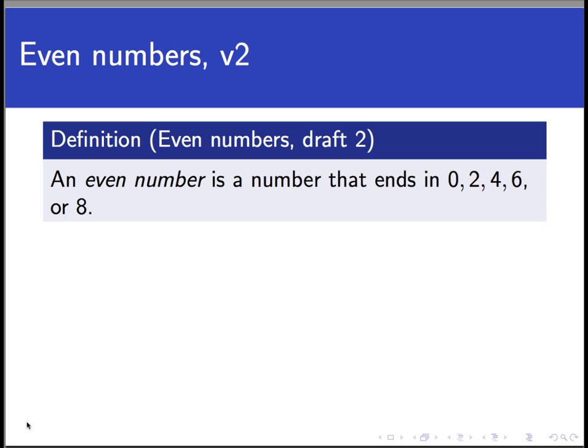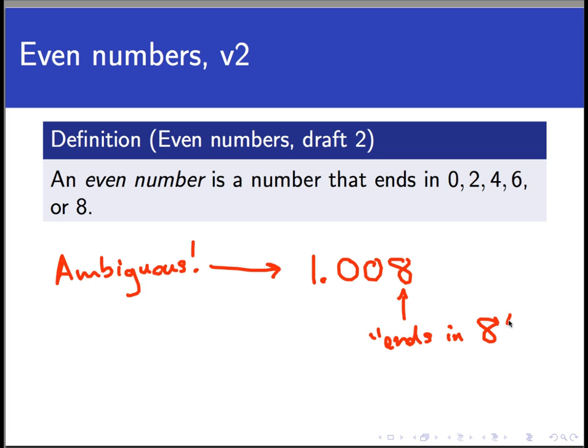But there's still a problem with this definition. It's ambiguous. And that means that there are some ways to game this definition that allow numbers that are clearly not even to be misidentified as being even. For example, take the number 1.008. Now, you could say that this number ends in 8. So by the definition above, that would make it an even number. But that's crazy. That's not even a whole number.